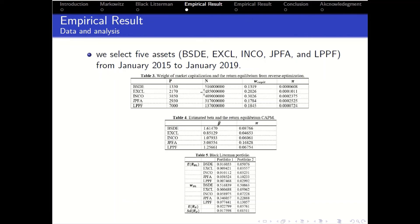For the empirical result, we select five assets from LQ45 from January 2015 to 2019. This is the calculation of the weight capitalization from price and number of shares and the estimated equilibrium from beta asset. This is the calculation of expected return Black Litterman and the weight, and this is the result of expected return portfolio and standard deviation of the return portfolio.